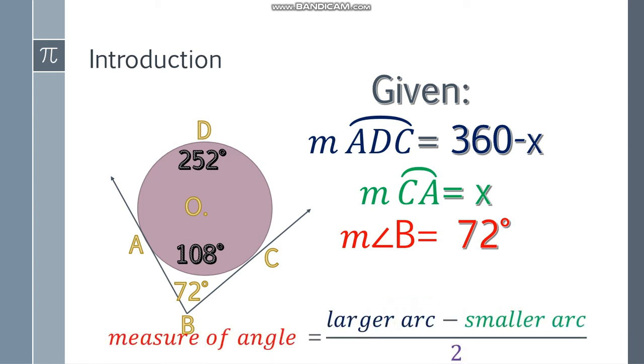And there you have it. So the measure of arc CA is 108 degrees, and the measure of arc ADC is 252 degrees.